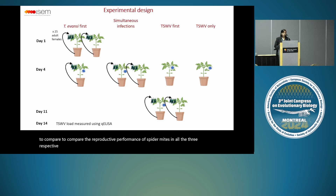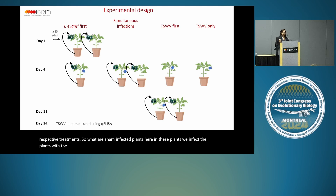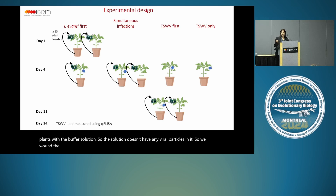What are sham-infected plants? In these plants, we infect with buffer solution — the solution doesn't have any viral particles. So we wound the leaf, but it's not infected; they are just wounded plants.